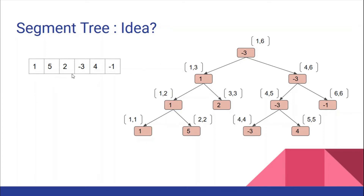Here is an array for which this tree is made — this is a segment tree for this array. The root node keeps the result of index 1 to 6. The minimum of all elements from index 1 to 6 is -3, so we have kept -3 here. The left child keeps the result from 1 to mid, and mid is (1+6)/2 = 3. So the left child keeps the result from 1 to 3, and the right child keeps the result from 4 to 6. From 1 to 3, the minimum is 1.